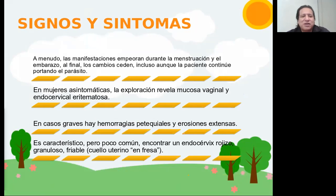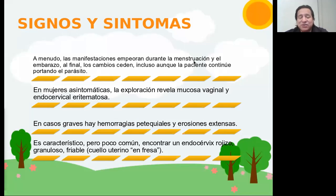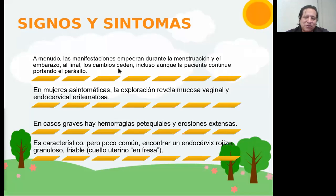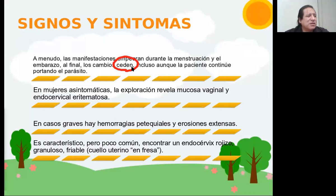Estos síntomas en el caso de la mujer suelen empeorar cerca de la menstruación — generalmente uno o dos días antes, durante y también uno o dos días después, donde se vuelve más intenso: mayor picazón, mayor sensación de ardor. En caso de que la mujer esté embarazada, también suele empeorar la sintomatología. En algunas mujeres, a través del tiempo, si no han sido diagnosticadas y no hacen tratamiento, incluso pueden ir desapareciendo los síntomas, convirtiéndose en una mujer asintomática.